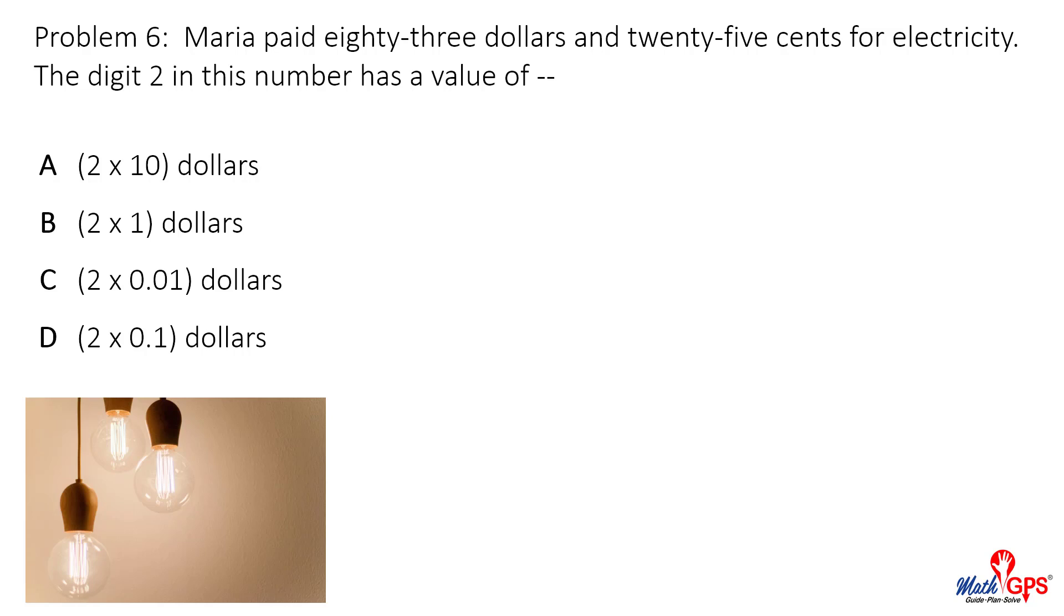Problem six: Maria paid $83.25 for electricity. The digit two in this number has a value of...